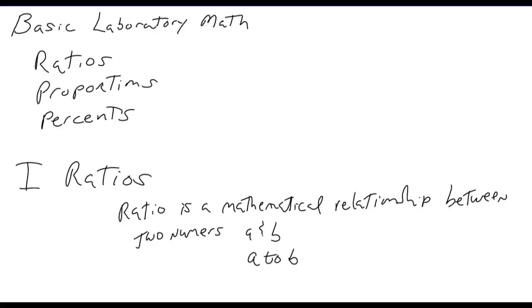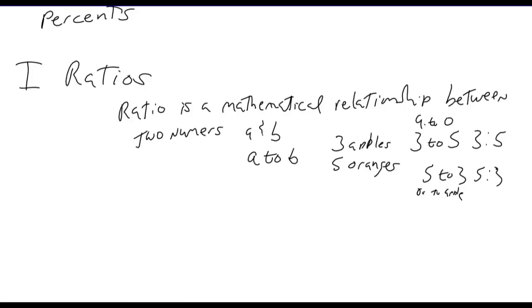Let's say we had a bowl of apples and oranges and we have three apples and five oranges. We could express this as a ratio of apples to oranges as three to five. We can also write that with a colon. Or in terms of oranges to apples, we could say it's five to three. That's the relationship of oranges to apples in this case. So, that's a ratio.